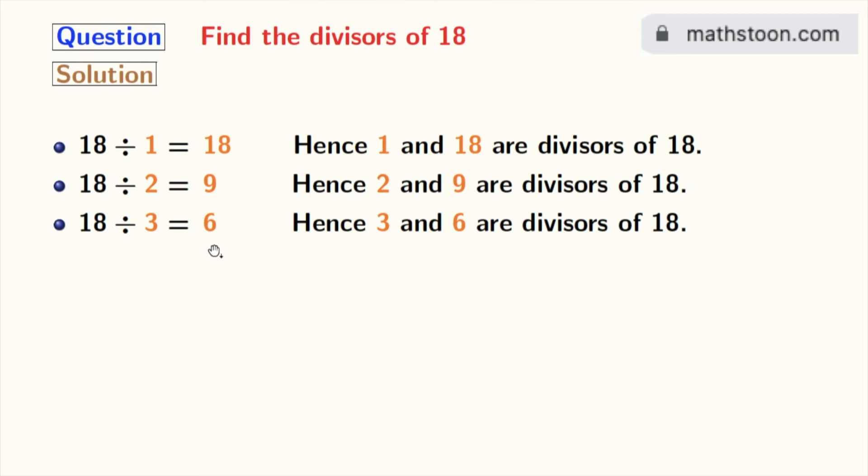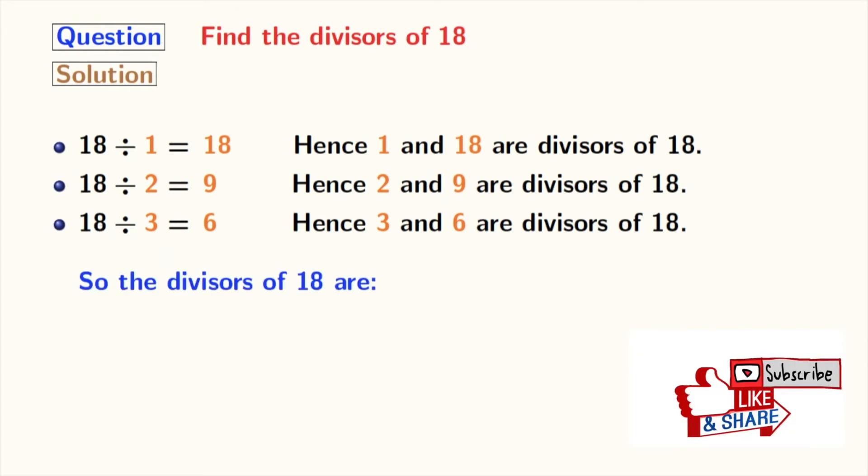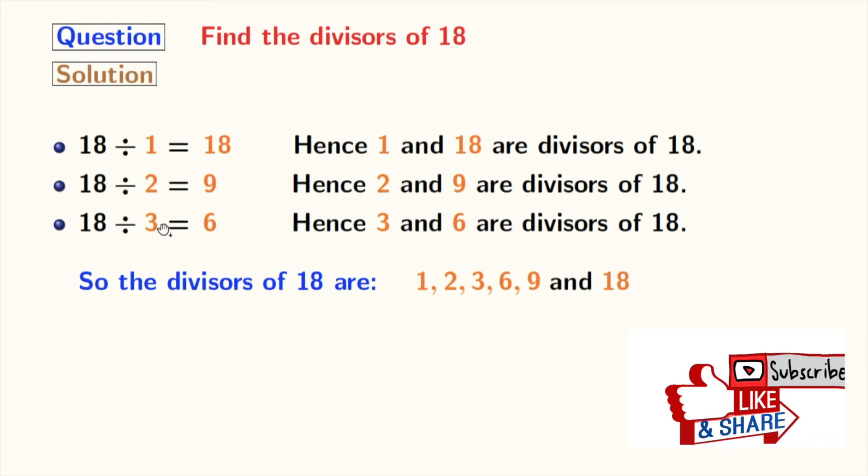Now there are no numbers between 3 and 6 which can divide 18, so we will stop right now. Now we have all the divisors of 18 which are in orange colors. Those are 1, 2, 3, 6, 9 and 18.